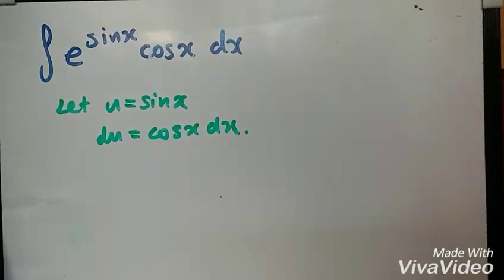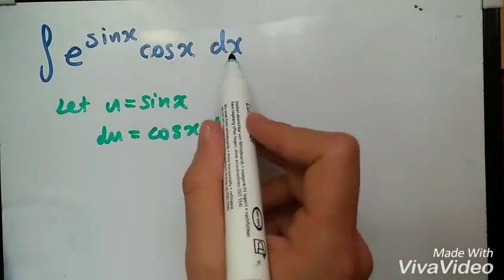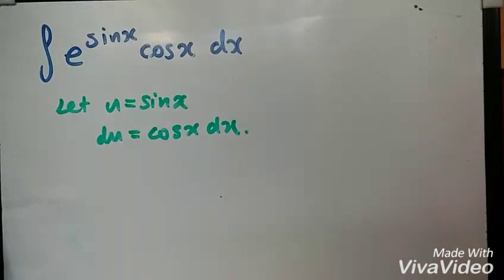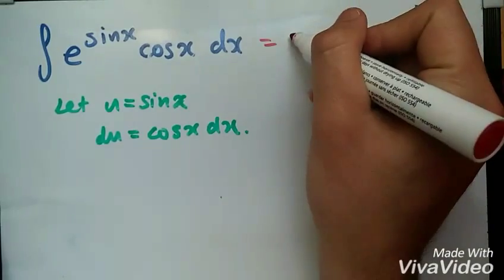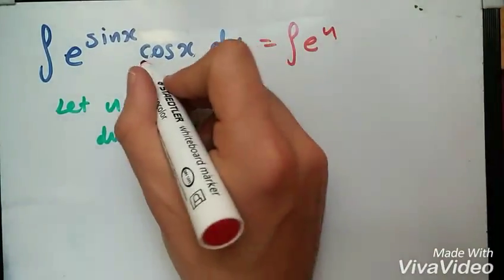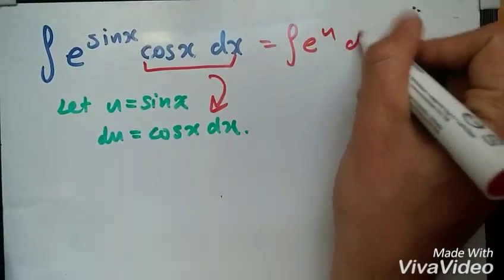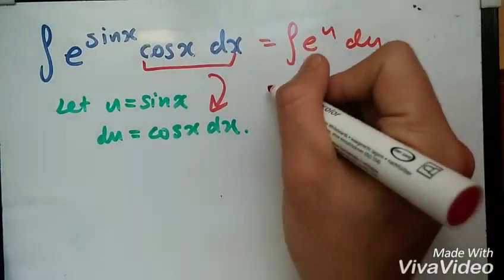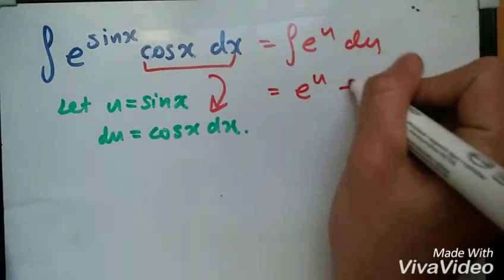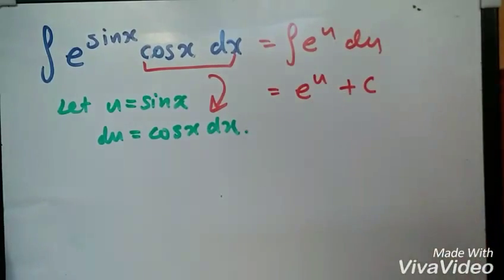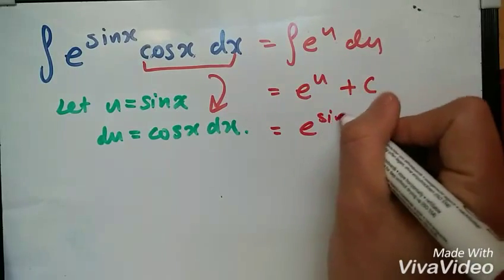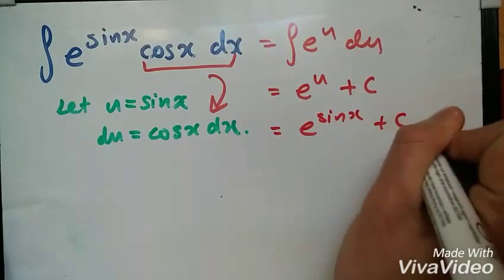Check it out — we have cos x dx = du and sin x = u. So all of this is simply e to the power u, where sin x is now u and cos x dx is now du. Integrating, it's easy — just e to the power u plus c. And since u = sin x, the final solution is e to the power sin x plus c.